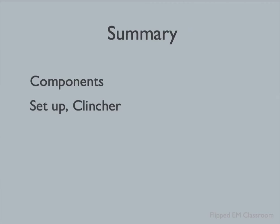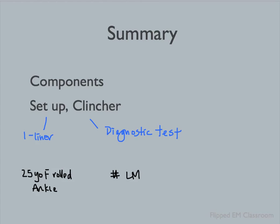Then move on to the summary, where we highlight the overall clinical picture in a few sentences. Components include a setup and something from either the physical examination or diagnostic studies that strengthens your diagnosis. For example, our patient's setup would be: '80-year-old female with diabetes and CABG with increasing chest pain identical to her previous angina.' The clincher could be that her ECG has shown ST changes suggestive of acute coronary syndrome. Another example: a 25-year-old female who rolled her ankle — the clincher being that the x-ray shows a fracture of the lateral malleolus.